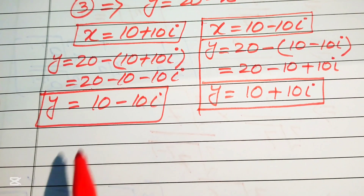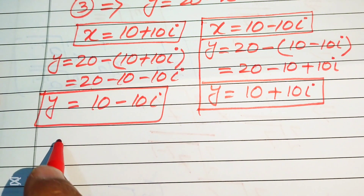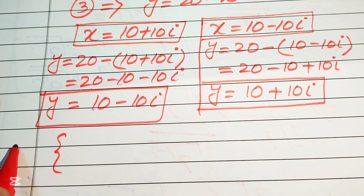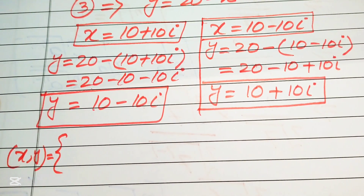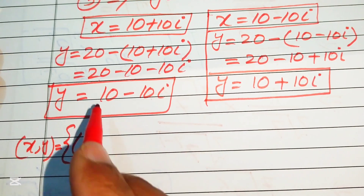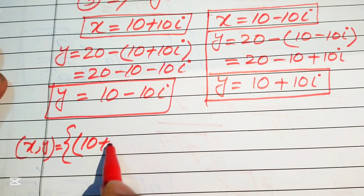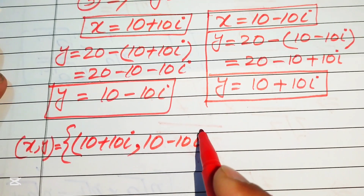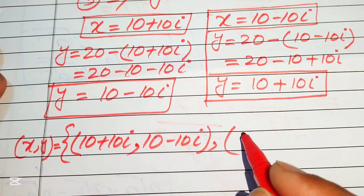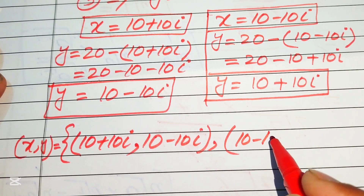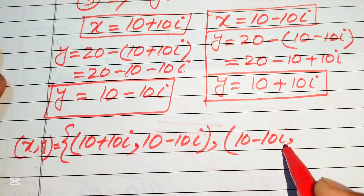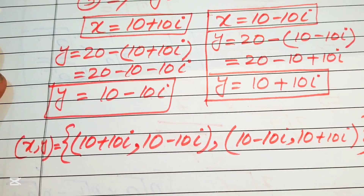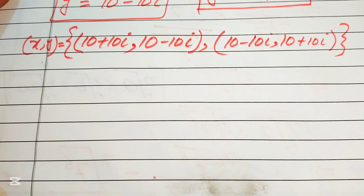So finally, there are two solutions of the given equation. We write these two solutions as ordered pairs (x, y). The first solution is (10 plus 10 iota, 10 minus 10 iota), and the second solution is (10 minus 10 iota, 10 plus 10 iota).